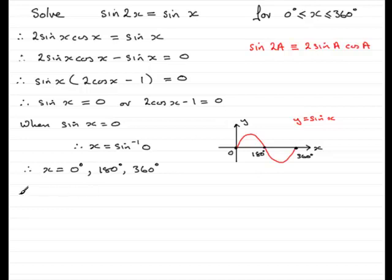Now, we've got the other equation to deal with. So, if we just say when 2 cos x minus 1 equals 0. If we add 1 to both sides and divide by 2, we can make cos x the subject. And so, cos x turns out to be 1 half. So, therefore, x is equal to the inverse cos of 1 half.